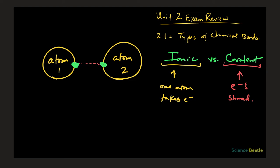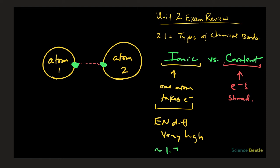If you think about this carefully — what does it mean for one atom to take electrons versus sharing them between two atoms? Ultimately, that comes down to the electronegativity difference. When one atom takes the electrons, that atom has a very high electronegativity compared to the other. The electronegativity difference for ionic bonds is very high — the magic reference number is approximately 1.7.